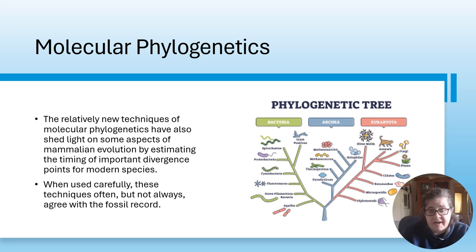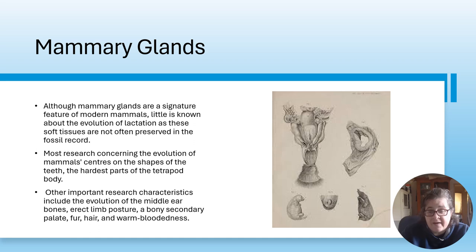Molecular phylogenetics - relatively new techniques have also shed light on aspects of mammalian evolution by estimating the timing of important divergences for modern species. When used carefully, these techniques have often, but not always, agreed with the fossil record.